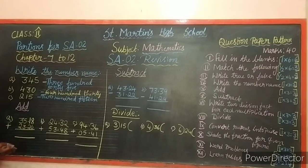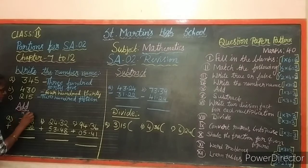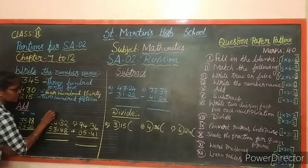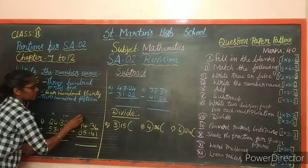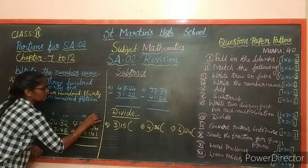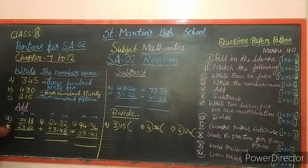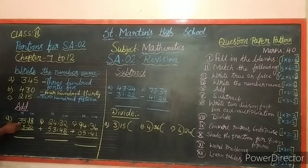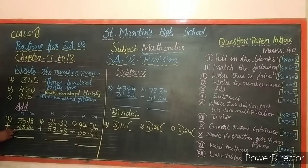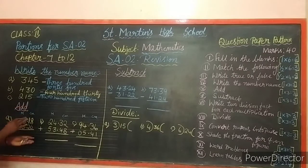Now let us do addition. Here we are adding in meters and centimeters. First sum: 35 meters 18 centimeters plus 23 meters 20 centimeters. We add from the ones place.